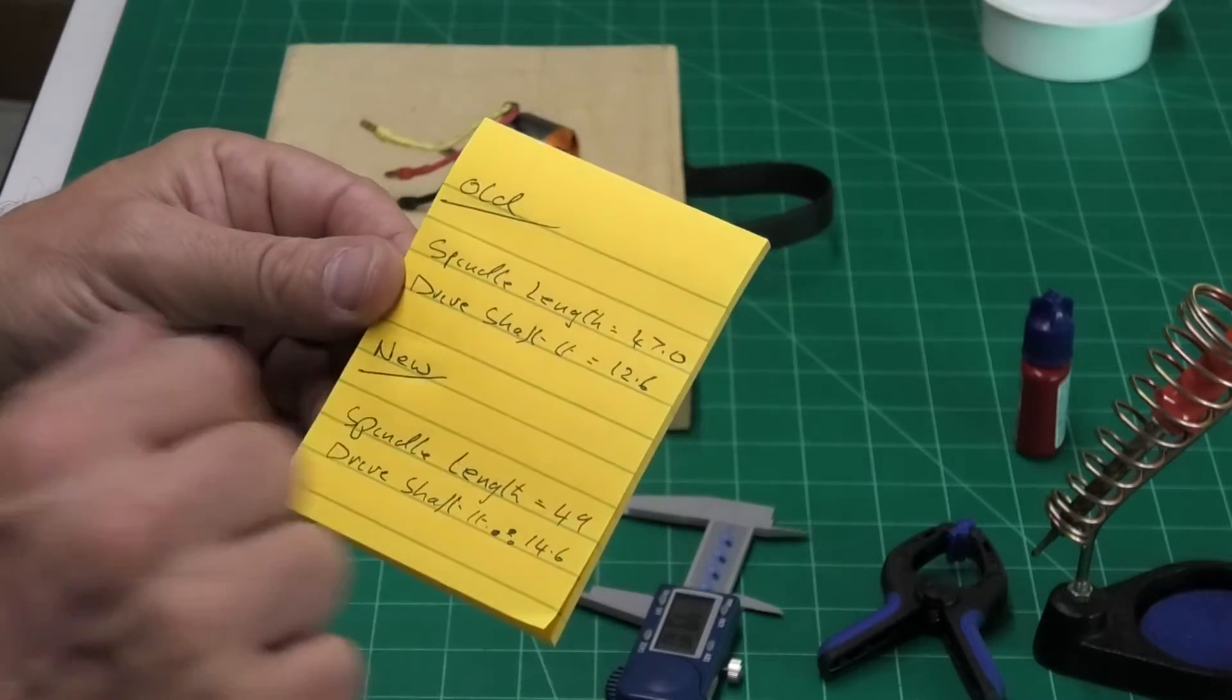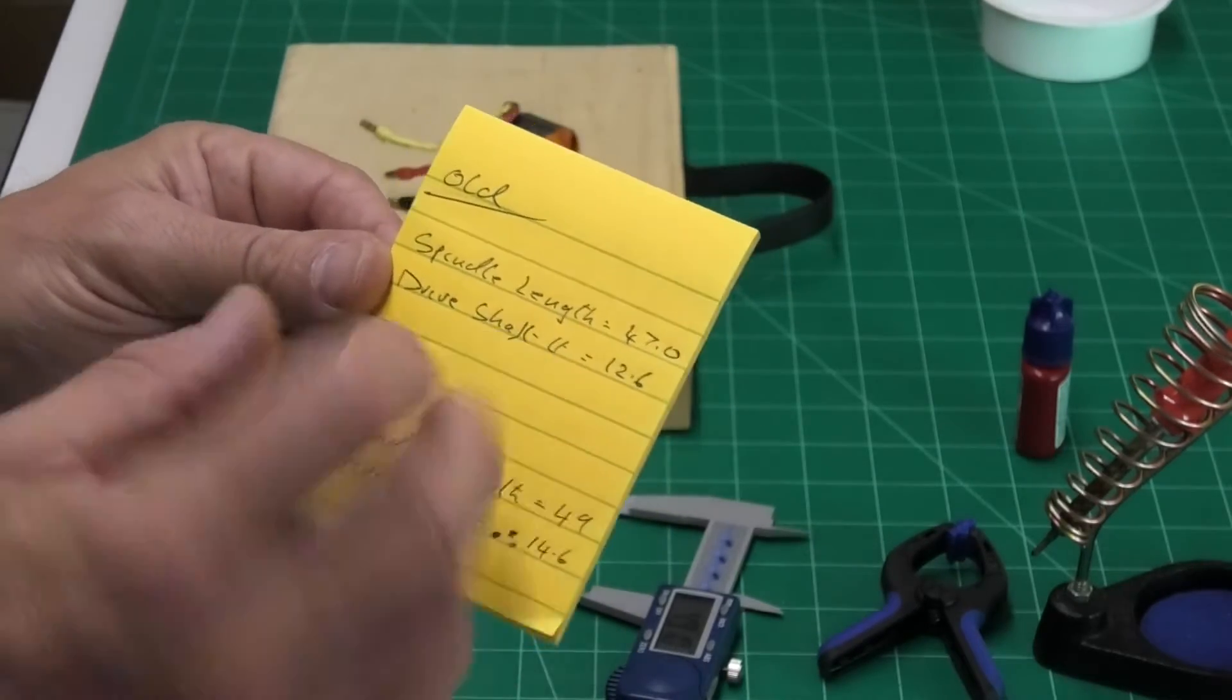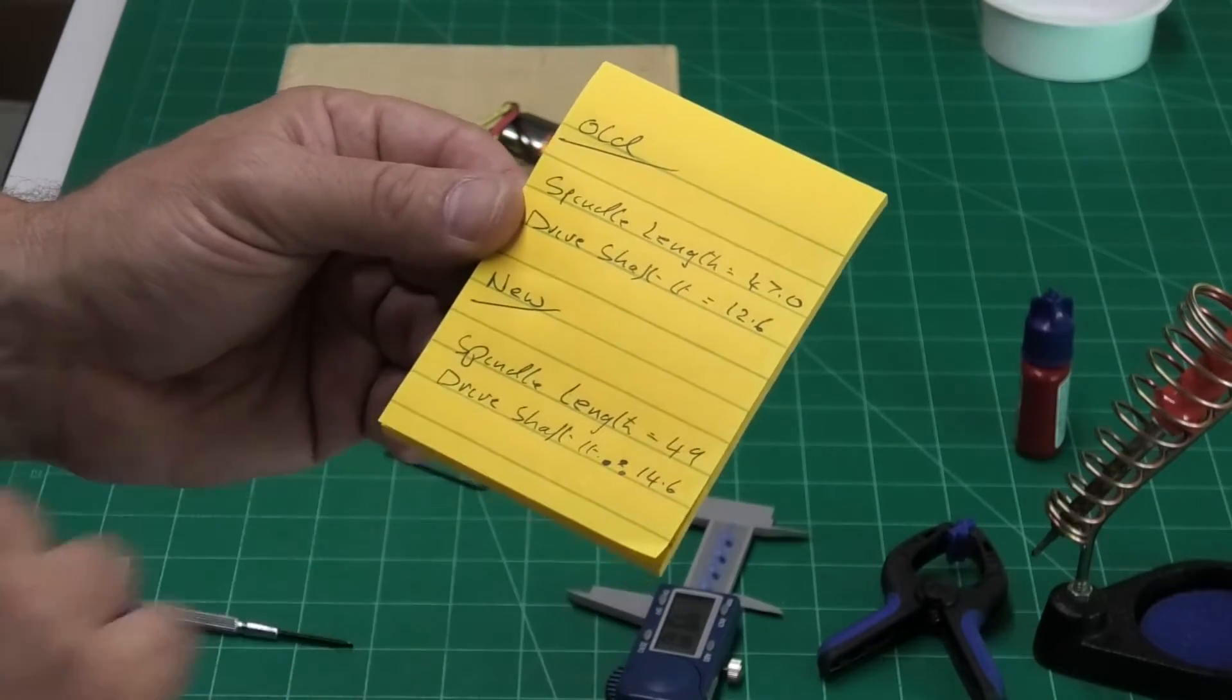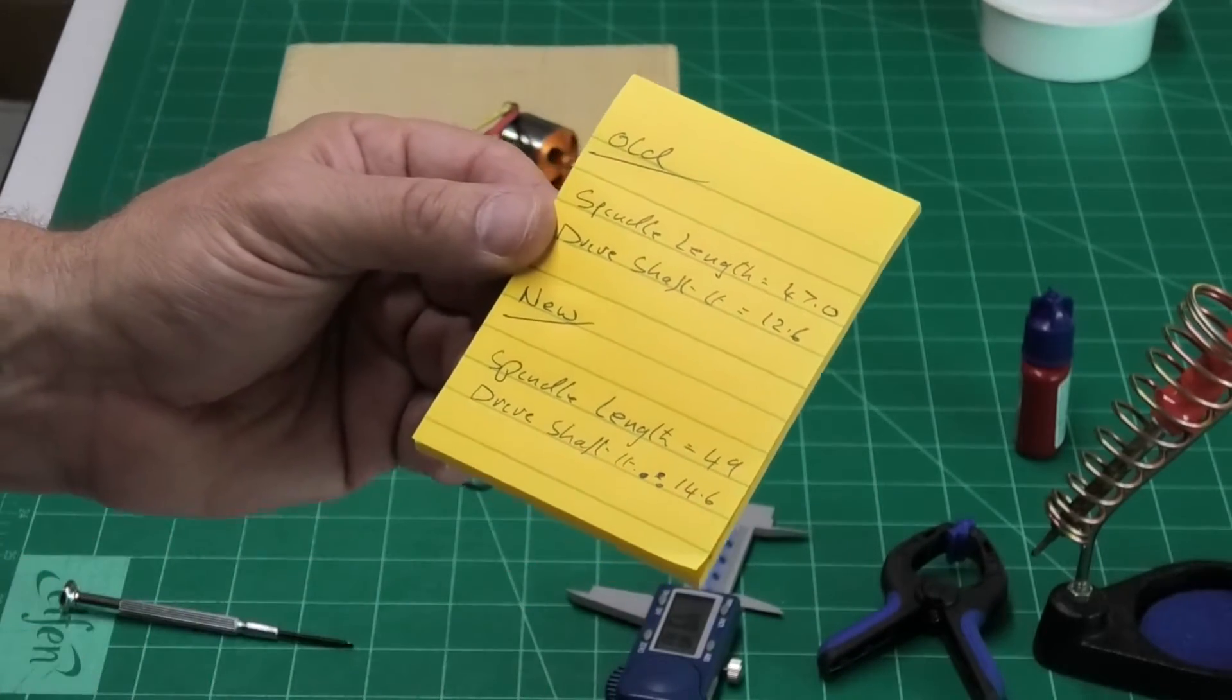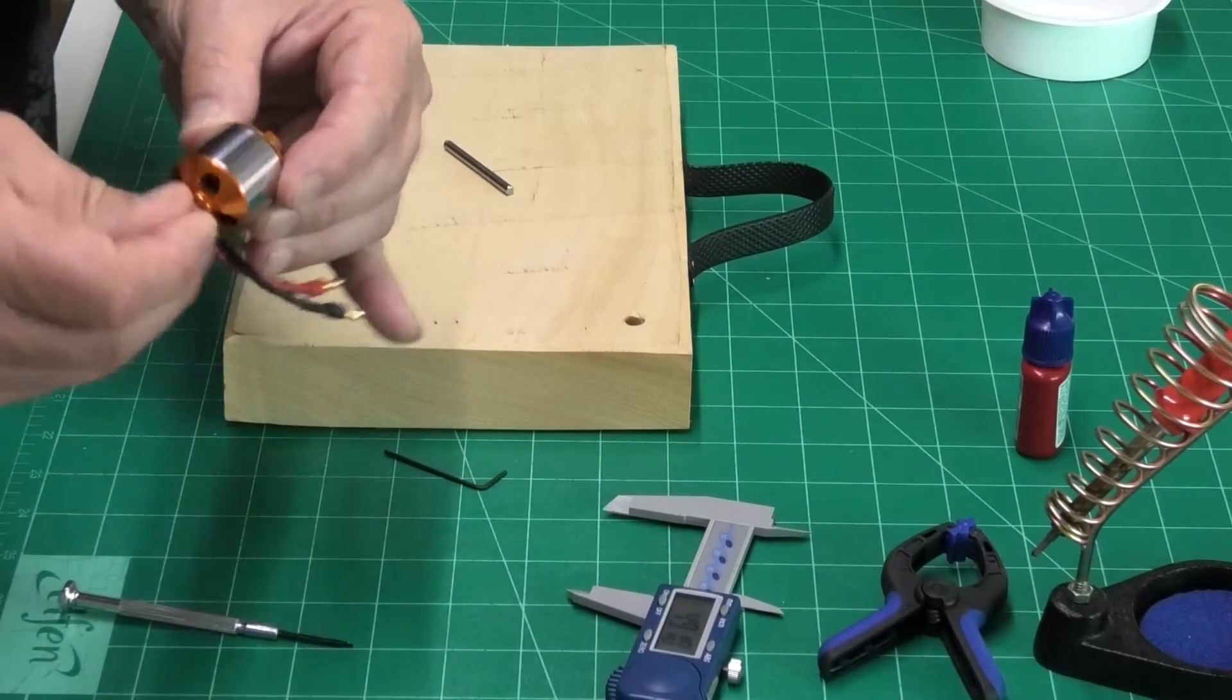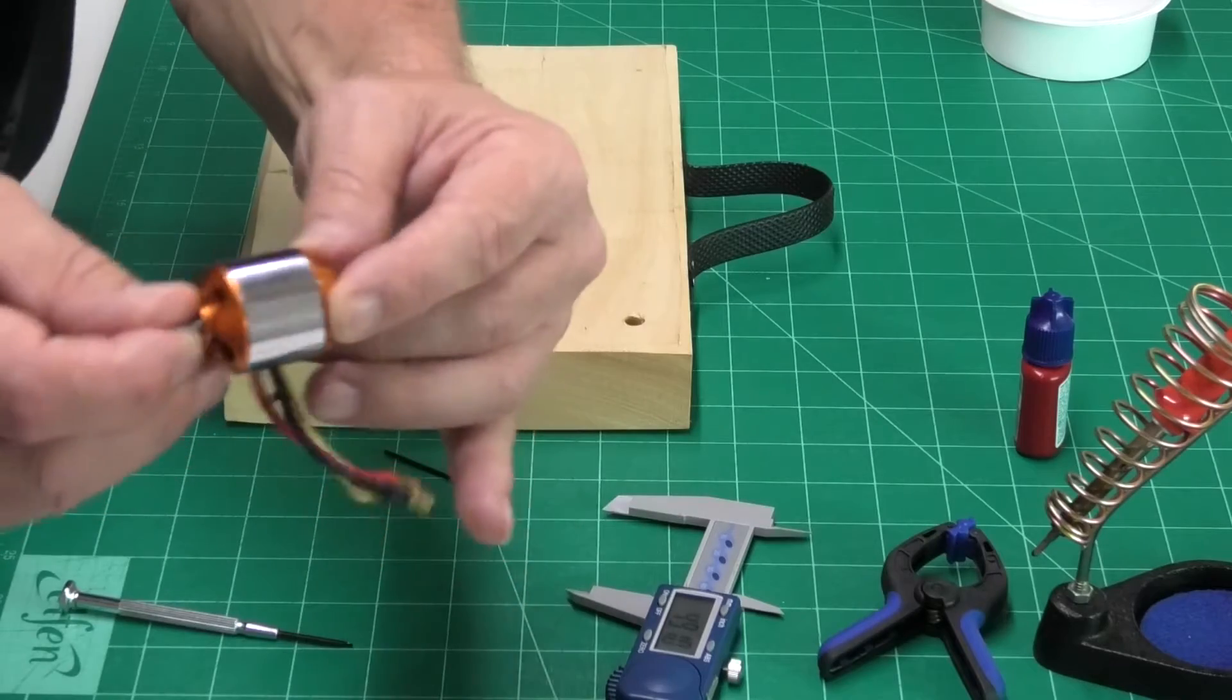So what I've done is I've just made a note, got spindle length. I've called it the drive shaft, the bit sticking out the front of the motor. It's 12.6. So when we finish, just want to make sure it's 14.6 and that should give us the same relative position. So we haven't got any slop in the motor.